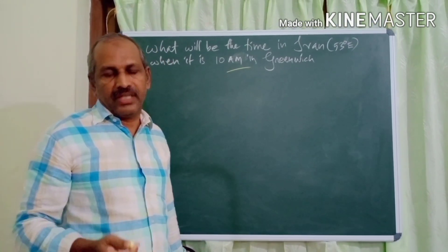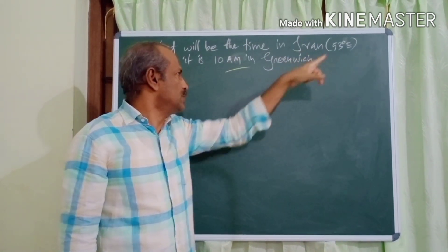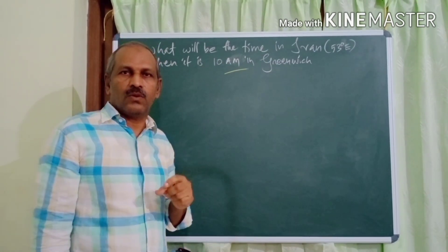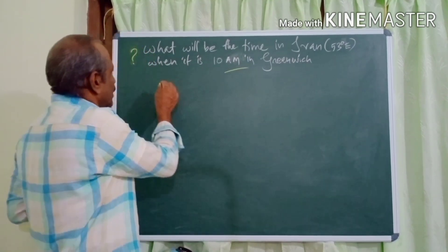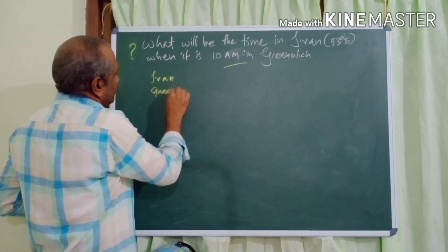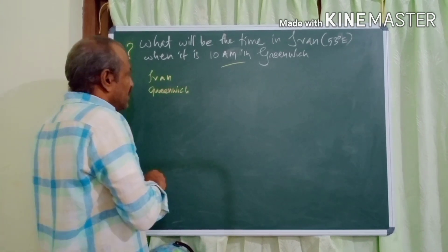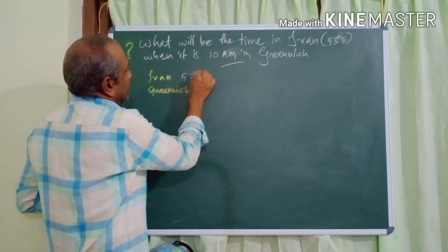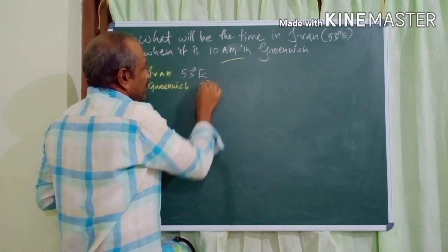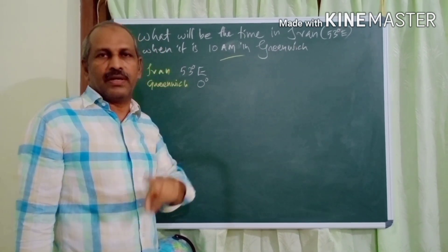Let us solve one problem. The question is: what will be the time in Iran, 53 degrees east, when it is 10am in Greenwich? Two places are given — Iran and Greenwich. The longitude given for Iran is 53 degrees east. Greenwich, as we know, is the standard meridian — that is, zero degree longitude.